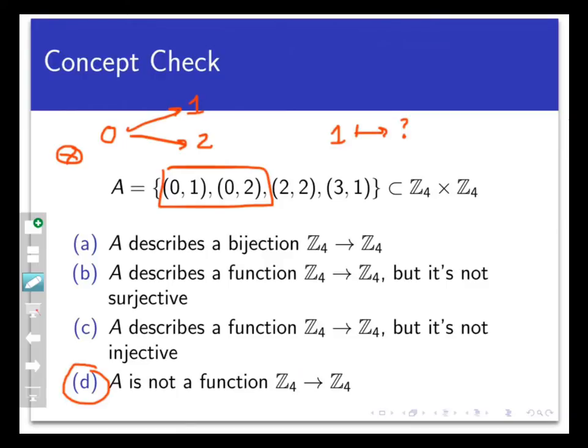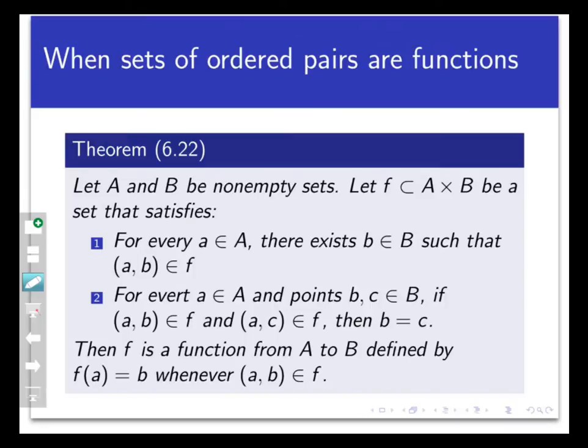The following theorem, which is theorem 6.22 in the Sundstrom text, gives us the conditions under which a random set of ordered pairs in A cross B will be a function. So let A and B be two non-empty sets and let F be a subset of A cross B that satisfies the following two properties.